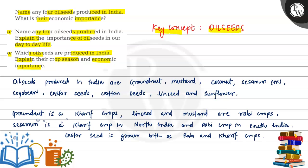So the key concept here is oil seeds. The oil seeds produced in India are groundnut, mustard, coconut, sesame (that is til), soya bean, castor seeds, cotton seeds, linseed, and sunflower.